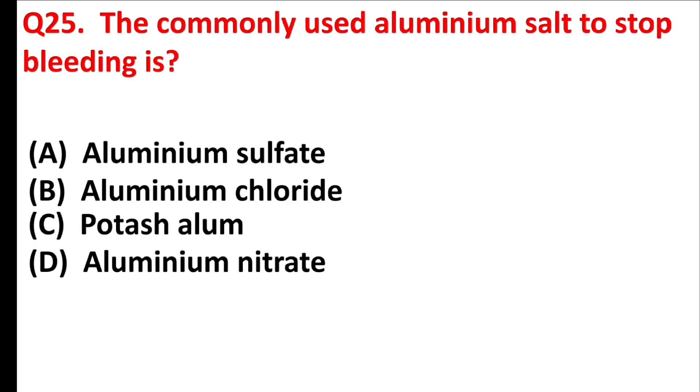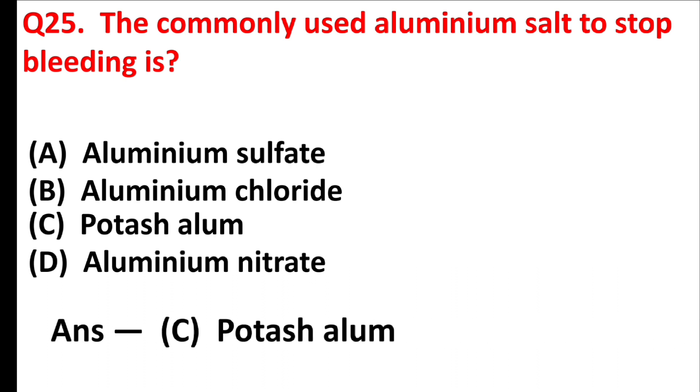The commonly used aluminium salt to stop bleeding is? Answer is Option C: Potassium alum.